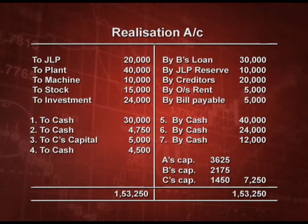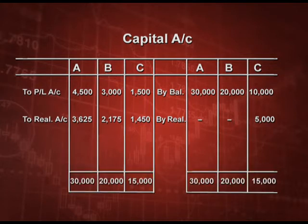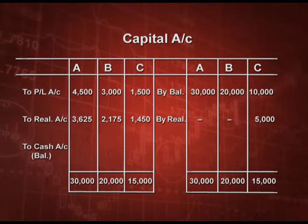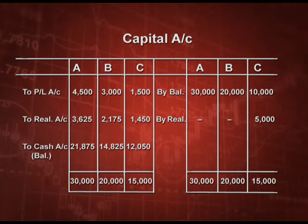This loss is transferred to the debit side of the capital account. The realization loss comes on the debit side, the P&L debit balance also comes on the debit side, and the capital given in the balance sheet liability side comes on the credit side. The balancing figure will be paid to partners through the cash account — A Capital debit, B Capital debit, C Capital debit to Cash. The balancing figure for A is 21,875, for B is 14,825, and for C is 12,050.